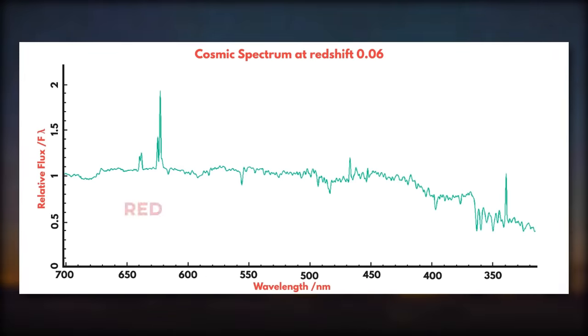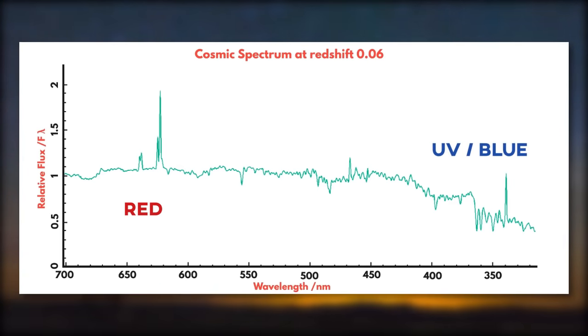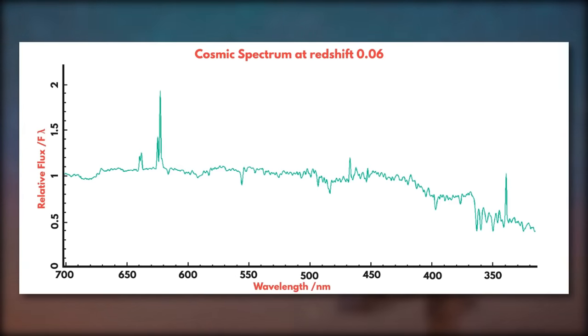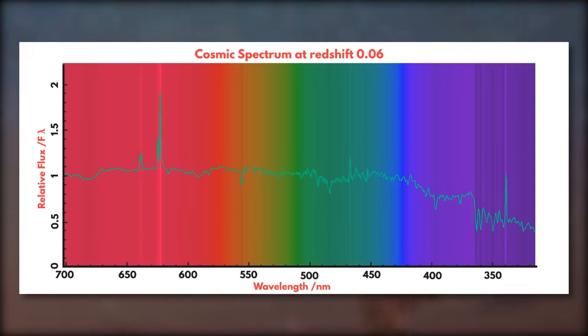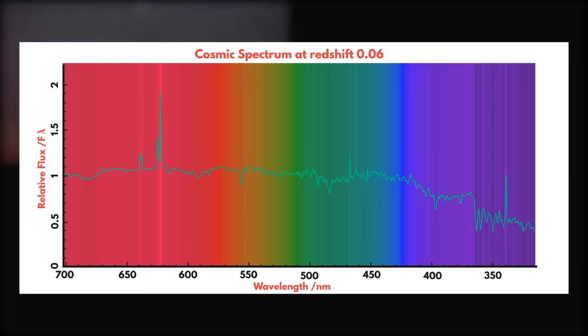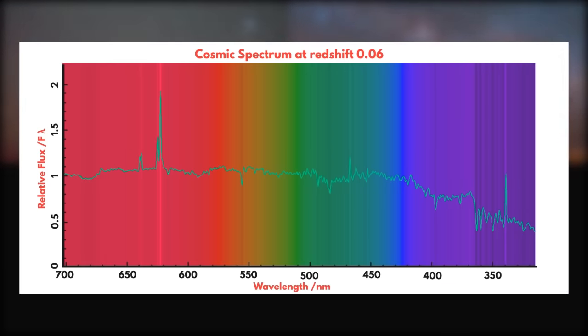On this graph we are able to see red light on the left and ultraviolet and blue light on the right. Along this graph view, we are also able to show the Cosmic Spectrum in a much more colorful way, allowing us to approximate the color the eye would see at each wavelength of light.